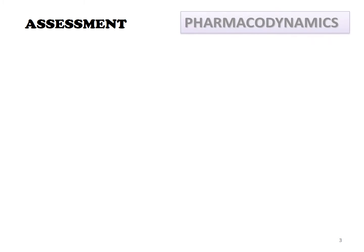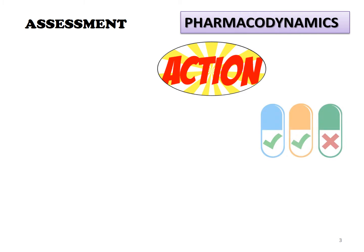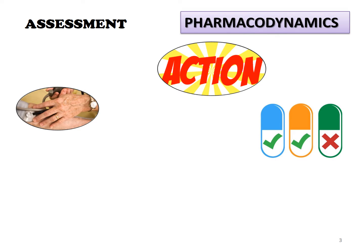The nurse researches the oral medication using a reliable drug reference for information on pharmacodynamics — for example, what the drug does and whether it interacts with other medications. The nurse identifies which baseline data must be obtained.